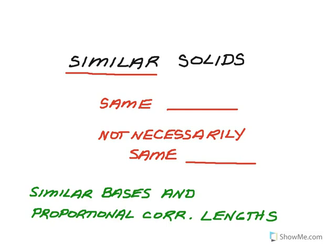You're used to working with similar polygons, so I think you can remember that two solids that are similar, like two similar polygons, will have the exact same shape. So we'll be talking about angle measures being the same, etc.